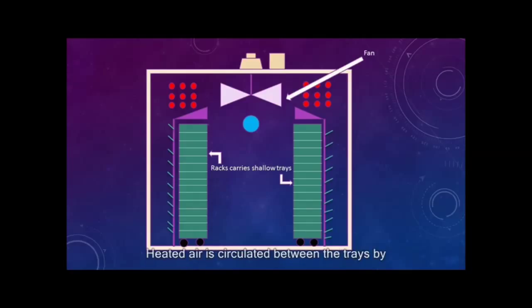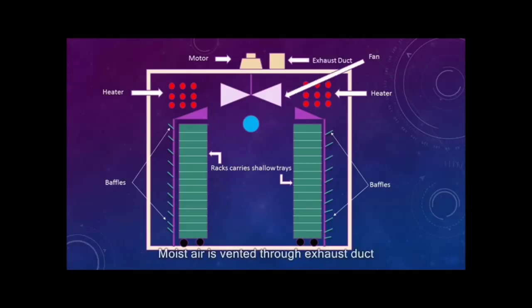Heated air is circulated between the trays by a fan and motor and passes over a heater. Baffles distribute the air uniformly over the stack of trays. Moist air is vented through the exhaust duct. Makeup fresh air enters through the inlet.